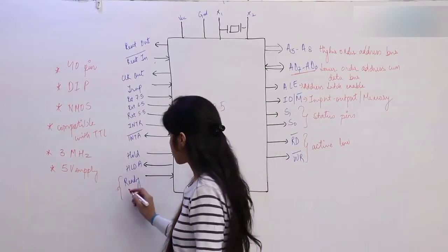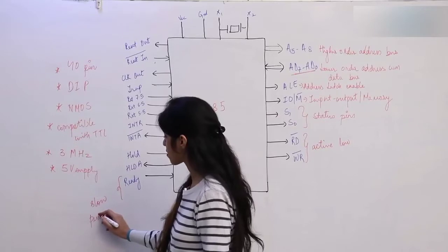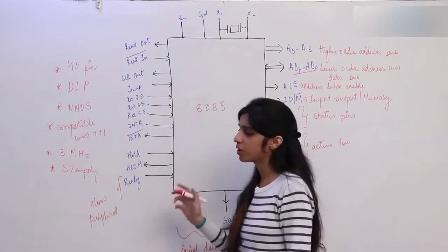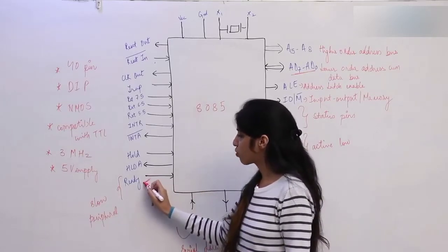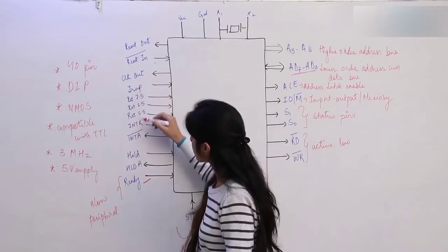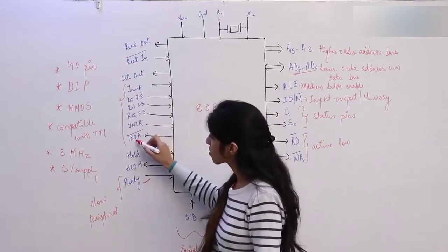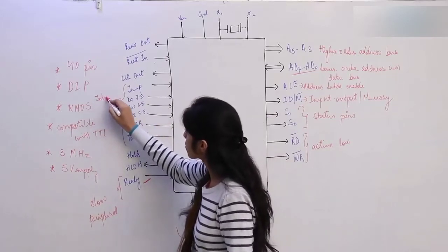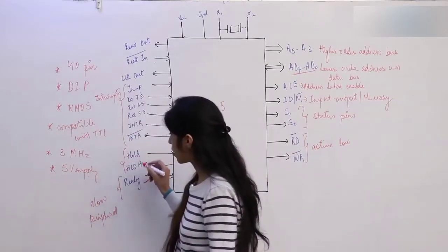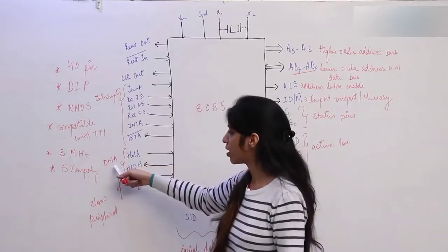The READY pin is used for slow peripherals — whenever a slow peripheral interfaced with the microprocessor is ready to be used, it gives this signal. The interrupt pins are TRAP, RST 7.5, RST 6.5, RST 5.5, INTR (interrupt), and INTA (interrupt acknowledgement) — we will learn about interrupts later. HOLD and HLDA (Hold Acknowledge) are used for Direct Memory Access (DMA) — we will also learn about DMA.